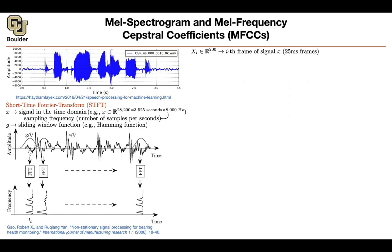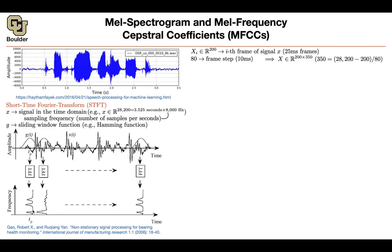There is going to be some overlap — equivalently, you can specify your frame step, which would be 10 milliseconds. So you're taking steps of 10 milliseconds, and 10 milliseconds multiplied by 8,000 gives you 80. So 80 is your step size. In the end, the entire signal can be represented as a matrix. It has 200 dimensions, and you have 350 time steps or frames — so 350 frames each 200-dimensional.